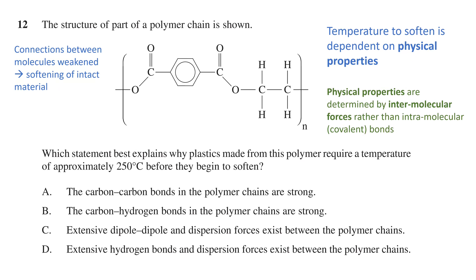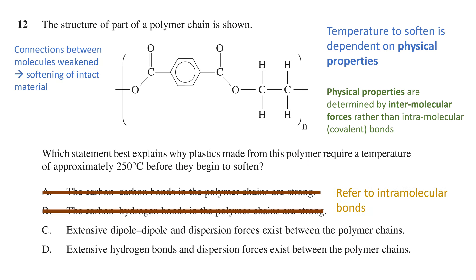The physical properties of a polymer and other molecules are determined by the intermolecular forces rather than the intramolecular bonds or covalent bonds. Therefore, we can eliminate options A and B, as these refer to the bonds between atoms rather than the forces between molecules. We just need to determine which option accurately represents the forces between the molecules in options C and D.